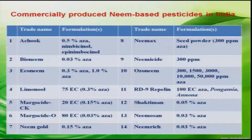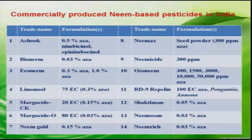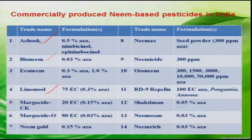These are some of the commercially produced neem-based pesticides in India. This table shows various commercially available neem-based insecticides, such as Limonole 75 EC, and many other products available commercially in the market. Their concentration varies from a few ppm up to 10,000 and 30,000 ppm.